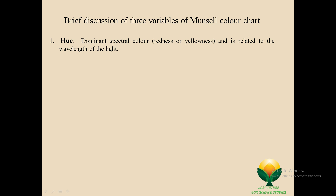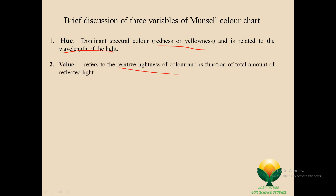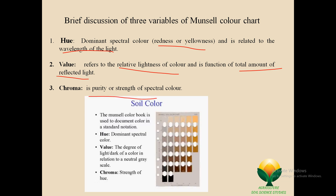Now, a brief discussion of the three variables. First is hue — the dominant spectral color, representing redness or yellowness, related to the wavelength of light. Second is value — it refers to the relative lightness of color and is a function of the total amount of refracted light. Third is chroma — it represents the purity or strength of the spectral color. As you can see in this picture, this is our Munsell color chart. The Munsell color book is used to document color in standard notation. Value is the degree of lightness or darkness relative to a neutral gray scale, and chroma is the strength of the color.